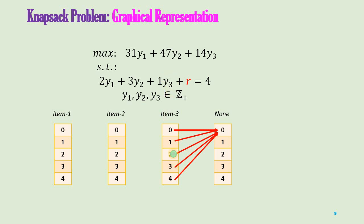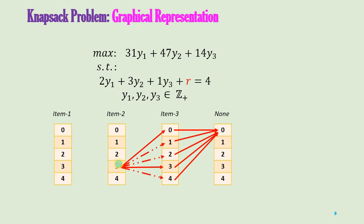Similarly, you can have all these possible movements. Sometimes you might have some infeasible movements. For example, let us say right now you have 3 tons of remaining capacity in the ship and you are filling item 2. If I fill 1 unit of item 2, it will consume 3 tons, and the remaining capacity will be 0. If I fill none of the units for item 2, the remaining capacity will stay the same. However, there is no feasible move that will take me from 3 units of remaining capacity to 1 unit of remaining capacity, because I cannot have fractional values for these variables. Identifying these infeasible moves will help you to shorten the tables and reduce the number of computations.